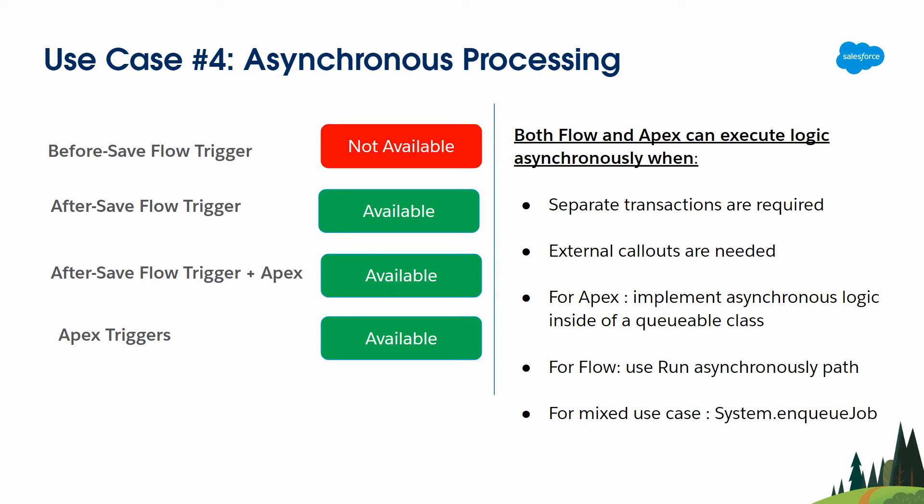The fourth use case is asynchronous processing. Both Flow and Apex can execute logic asynchronously — for example, in a separate transaction or when working with external callouts. With Apex, you can implement asynchronous logic inside a Queueable class. With Flow, you use what's called a Run Asynchronously path. For mixed use cases combining Flow and Apex, you can use System.enqueueJob. The choice depends on complexity — the more complex the logic, the more you should move toward Apex triggers.